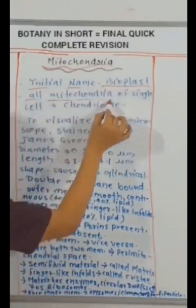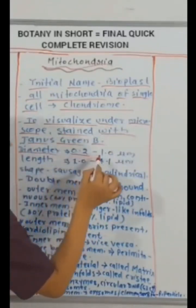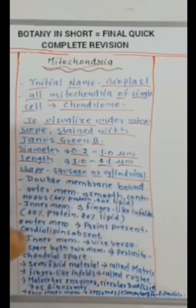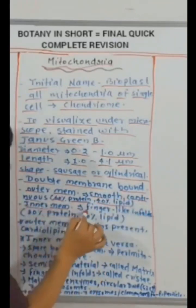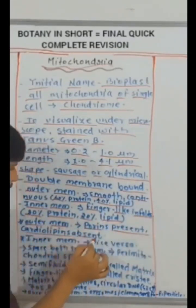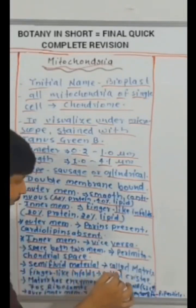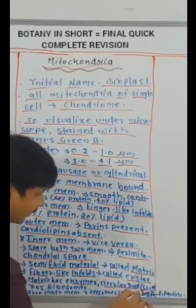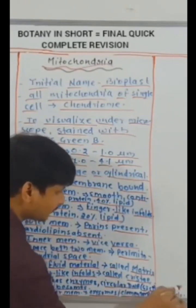Mitochondria. Initial name bioplast. All mitochondria of single cell called chondriome. To visualize under microscope stain with Janus green B. Diameter 0.2 to 1.0 micrometer. Length 1.0 to 4.1 micrometer. Shape sausage or cylindrical. Double membrane bound. Outer membrane smooth continuous. 60% protein, 40% lipid. Inner membrane finger like infoldings. 80% protein, 20% lipid. Outer membrane porins present, cardiolipin absent. Inner membrane vice versa. Space between two membrane perimitochondrial space. Semi-fluid material called matrix. Finger like infoldings called cristae. Matrix has enzymes, circular DNA rich in GC, 70S ribosomes. Over inner membrane, oxysomes or elementary or F0-F1 particles present.